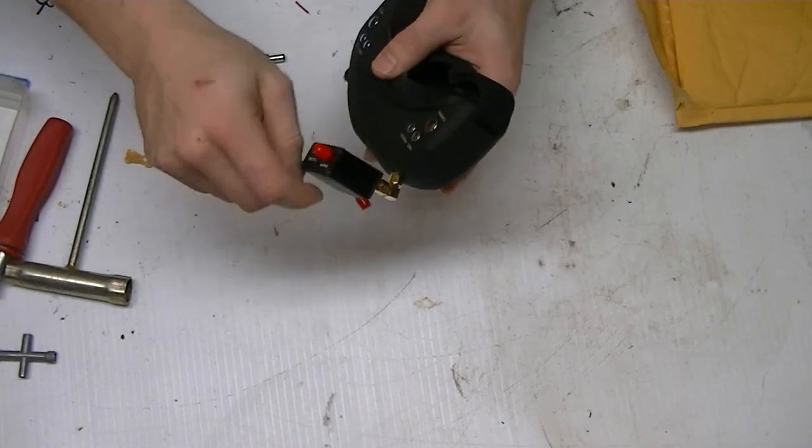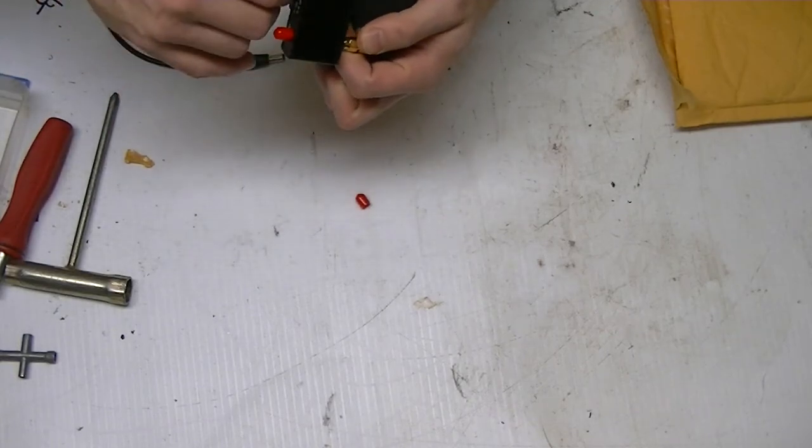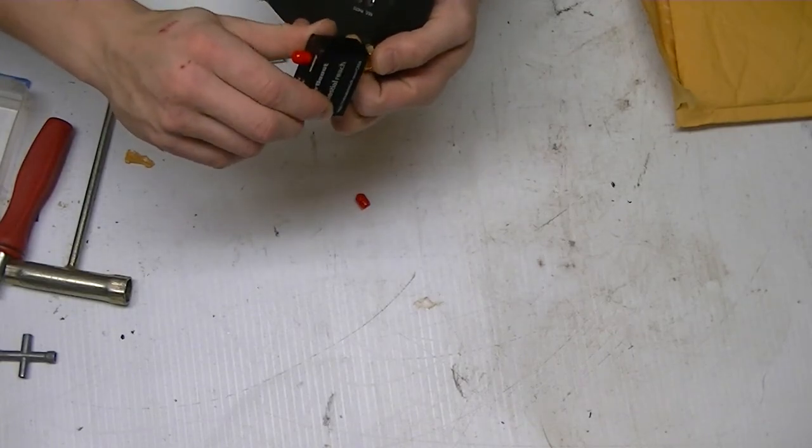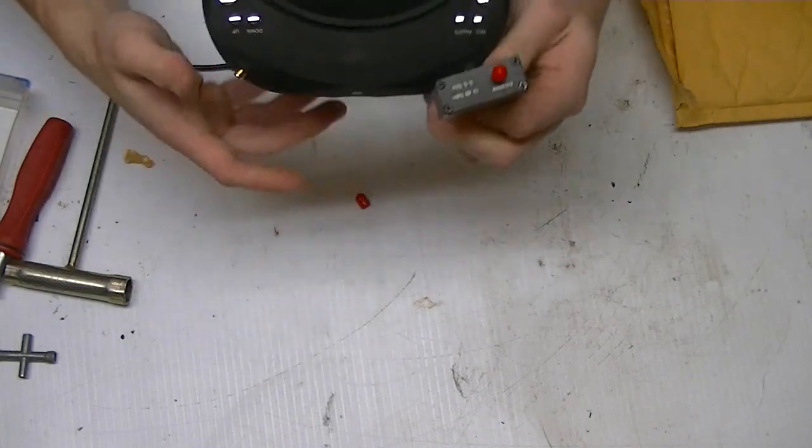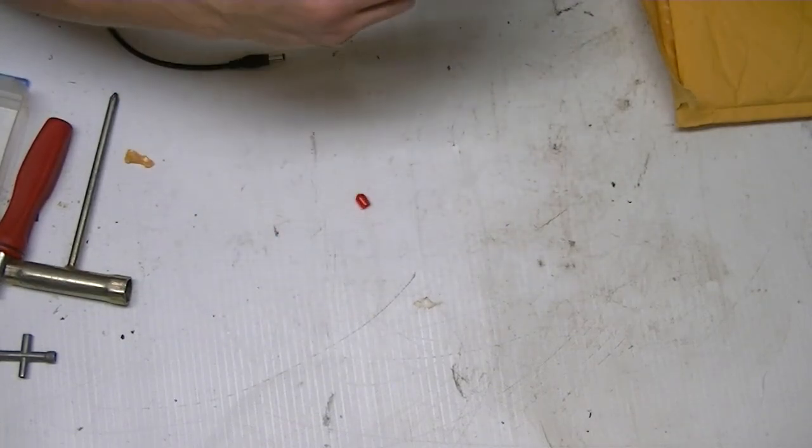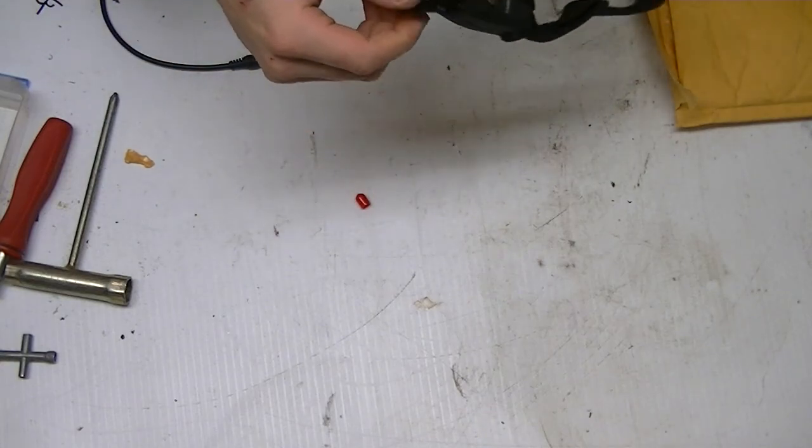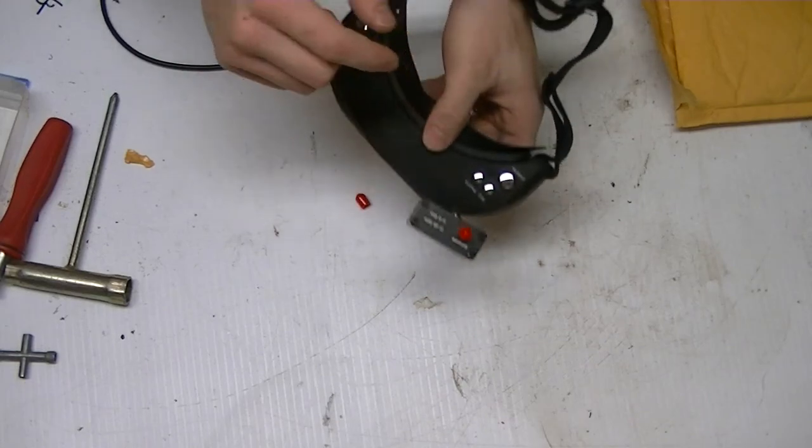Okay, and then this little piece here literally just screws right on. I don't know if I'm doing it the right way, maybe there's a different procedure they'd recommend. Tighten that down and my antenna go right on top of there.